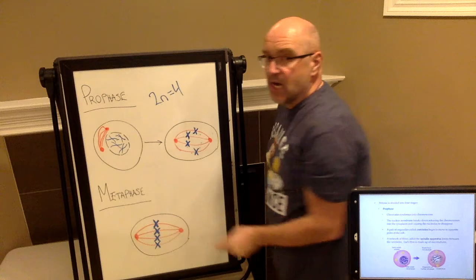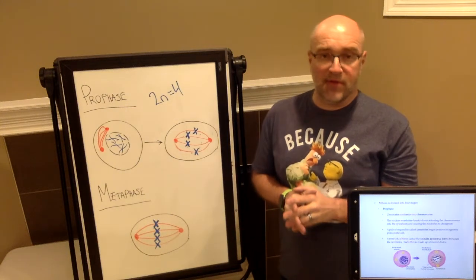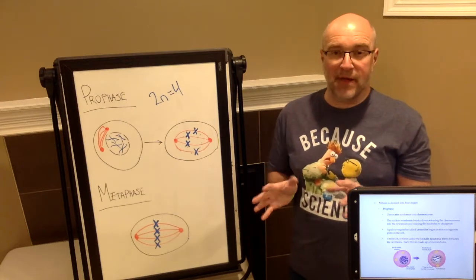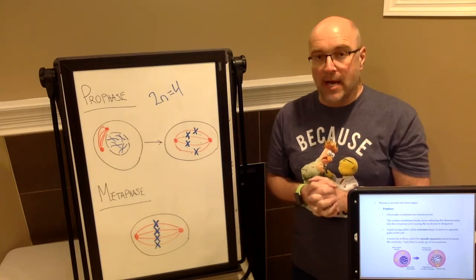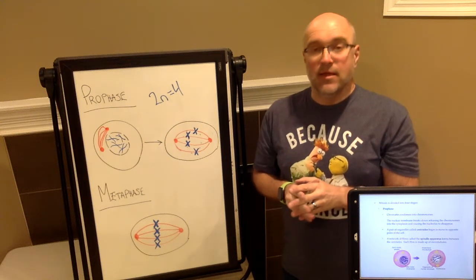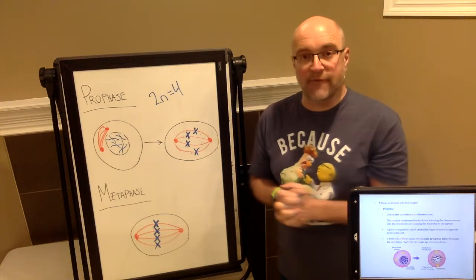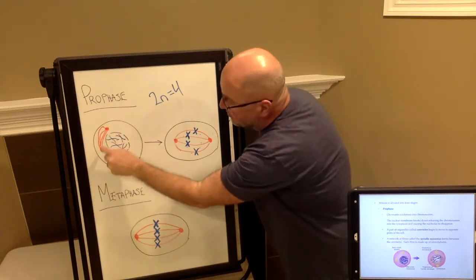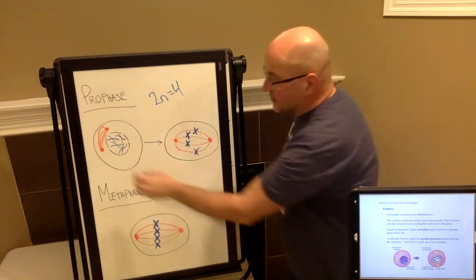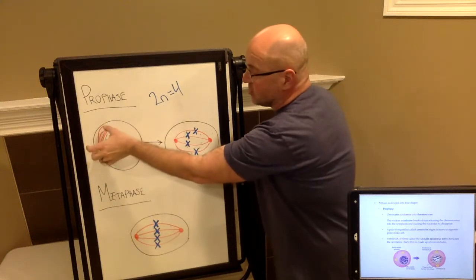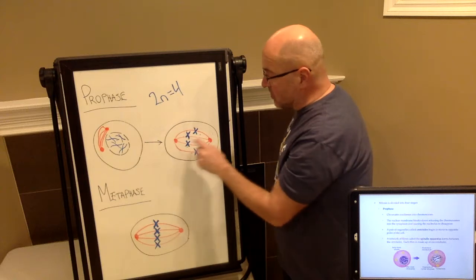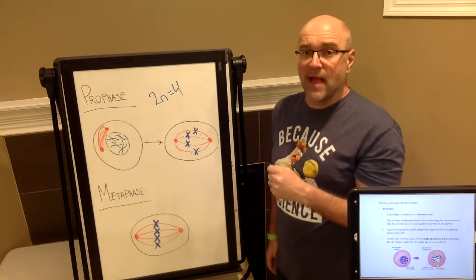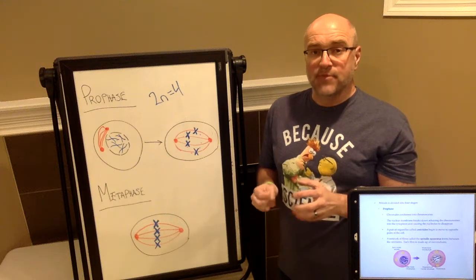What you'll also notice is the formation of organelles known as centrals, which really have no purpose in the cell until the cell needs to divide. The centrals will actually produce these structures called spindle apparatus. They're like fibers that actually extend through the cytoplasm, and they'll eventually have a role to play with the separation of the genetic material. So the centrals begin to form. The red circles are the centrals, and the spindle apparatus are the red lines that are connected between them.